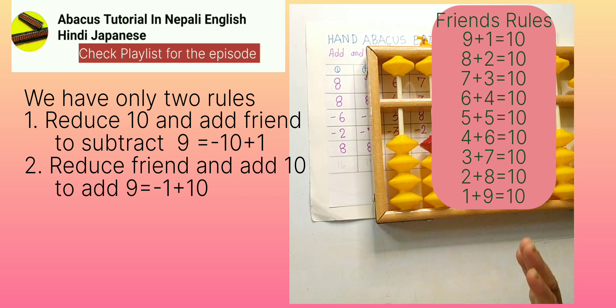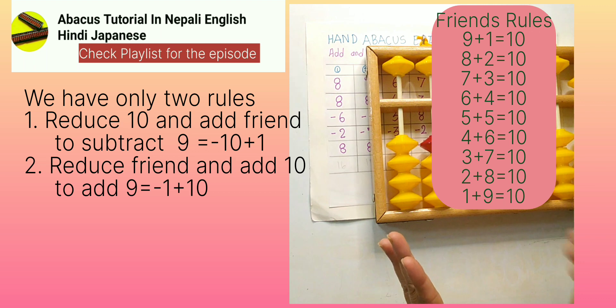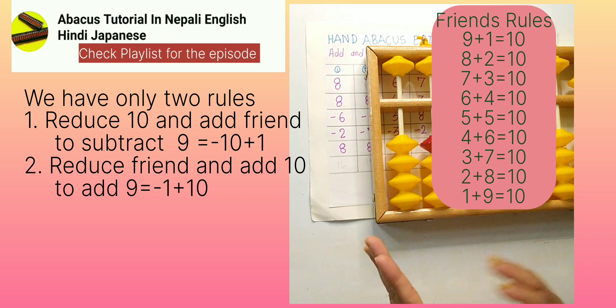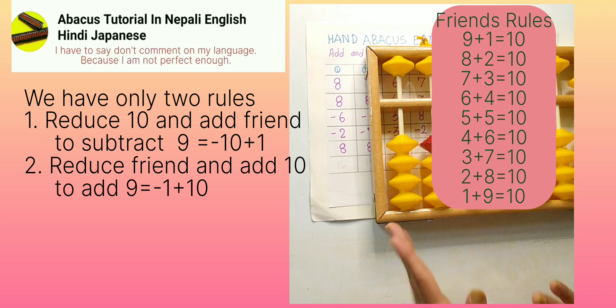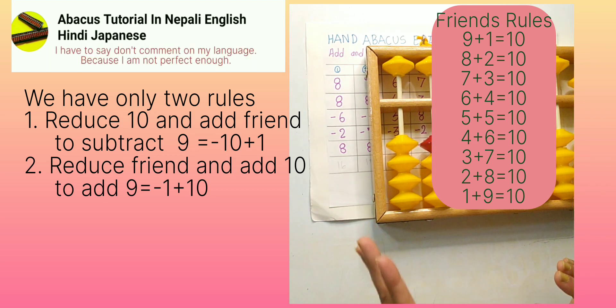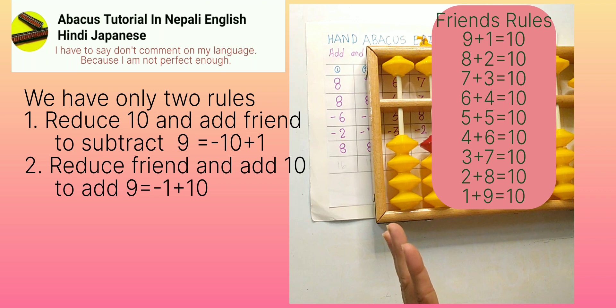If 9 are a friend rule, we can find that the answer is one. So if 9 are a friend, we will find one person.